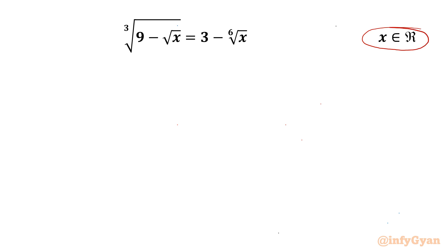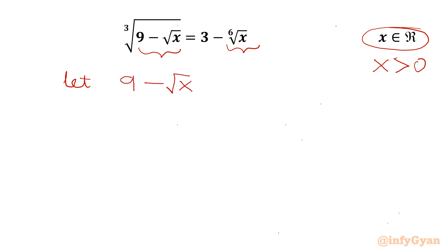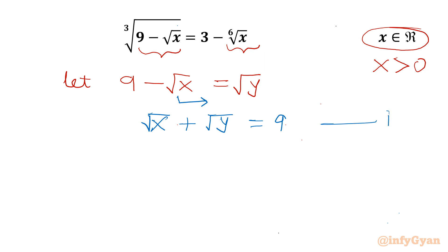Let us get started. First, x must be positive due to the 6th root of x for real solutions. Now I will use a substitution. Let us consider 9 minus square root x, this radicand term, equal to y. So from here I can write our first equation: taking that term to the RHS gives us square root x plus square root y equal to 9. Let us call this equation number 1.